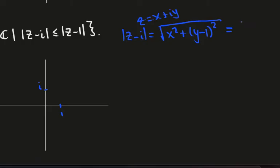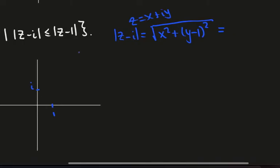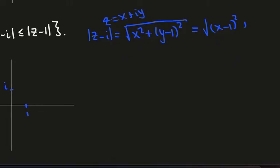And I'm going to look at the boundary case, when we just have an equal sign here, not a less than or equal to. And z minus 1 is going to be (x minus 1) squared plus y squared. Now I'll square both sides and I'll have x squared plus (y minus 1) squared is (x minus 1) squared plus y squared.